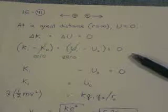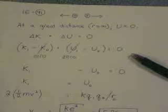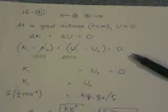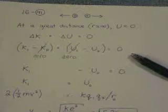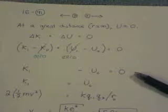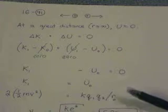So when we turn that change into the delta k, that's final minus initial, or I have k1 minus k0 plus u1 minus u0 equals 0. k0 is 0 because we release them from rest. u1 equals 0 because that's what potential energy is defined to be at a great distance. And what we're left with from that line is k1 minus u0 equals 0, or k1 equals u0.